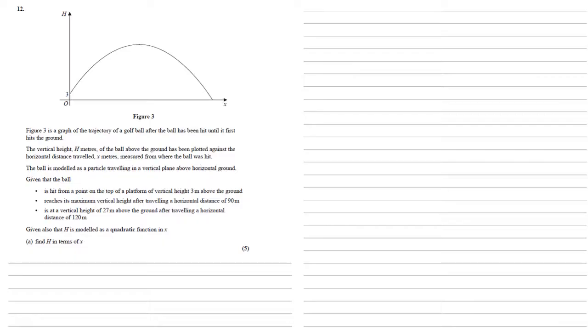Given that the ball is hit from a point on the top of a platform, a vertical height 3 metres above the ground, it reaches its maximum vertical height after travelling a horizontal distance of 90 metres, and is at a vertical height of 27 metres above the ground after travelling a horizontal distance of 120 metres. Given also that h is modelled as a quadratic function in x, we need to find h in terms of x.